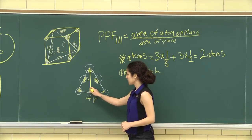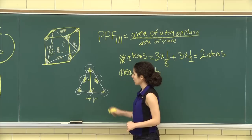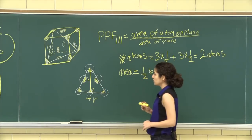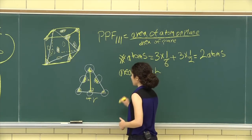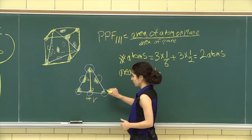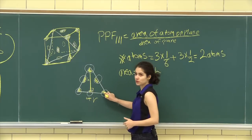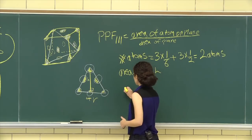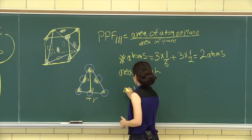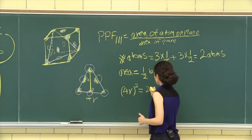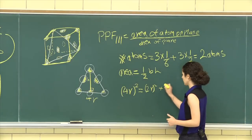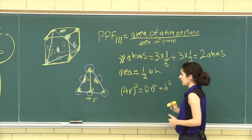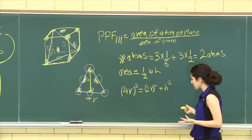As you can see, the height makes a right angle triangle, and we can use our Pythagorean theorem to find h. So if this was 4r and half of it was 2r, we'd say that 4r squared equals 2r squared plus h squared. Now we want to solve for h.